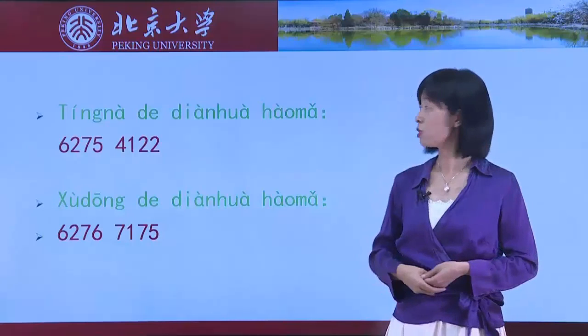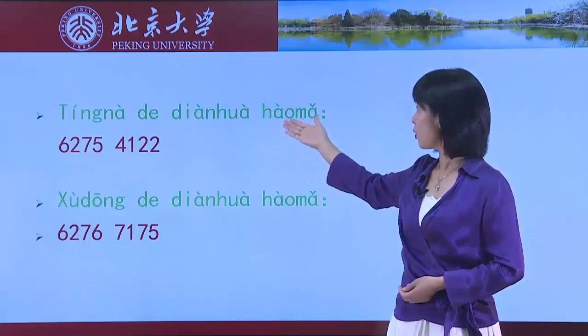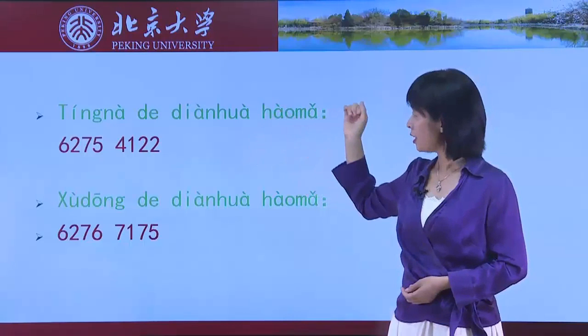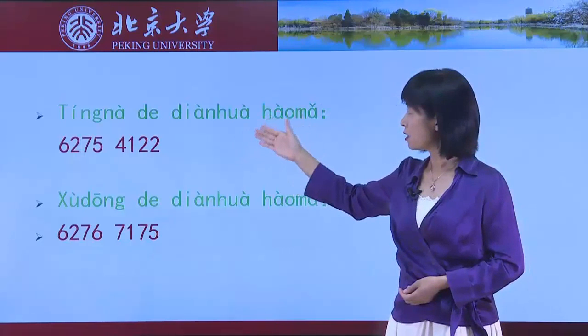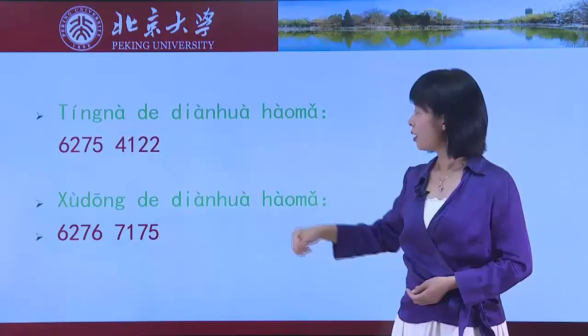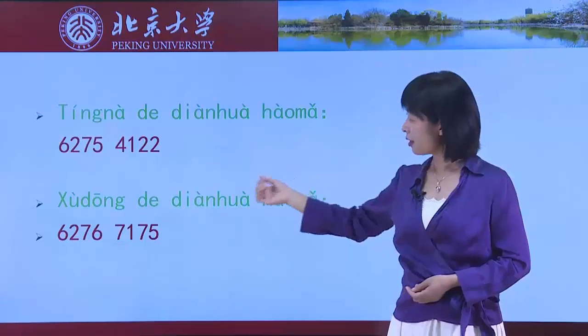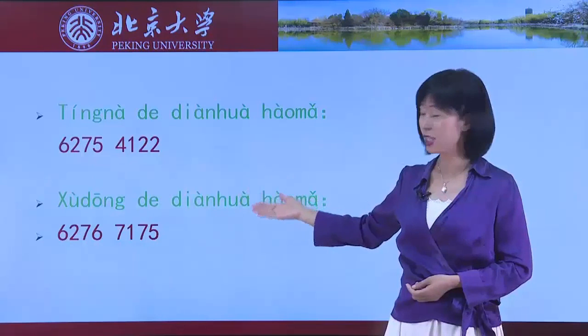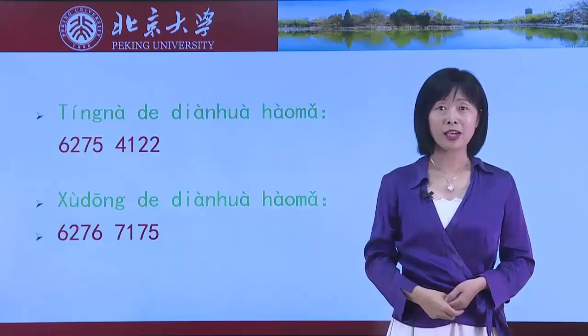停娜的电话号码 — read with me please: 六二七五-四一二二。旭东的电话号码: 六二七六-七一七五。You may have noticed that 停娜 and 旭东 didn't say 一, but they said 幺 for their telephone numbers.